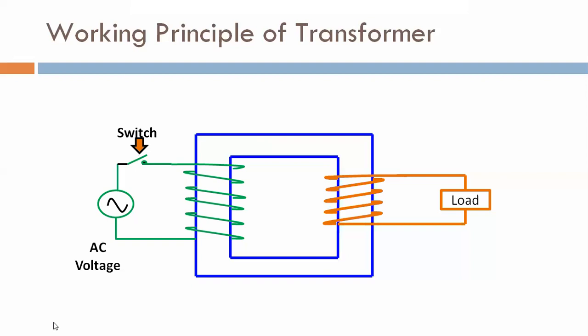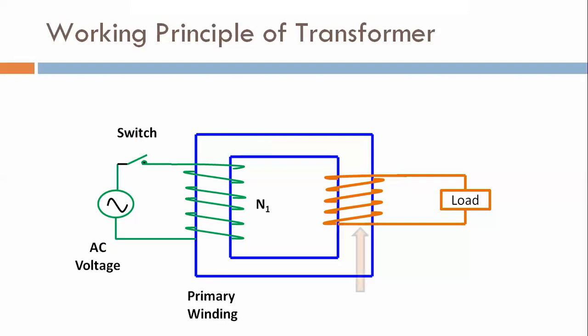These two windings are connected in such a way that they are electrically separated but magnetically linked through a low reluctance path — that is, by the help of this laminated core, these two windings are connected. When we keep this switch in the on mode, the primary winding is connected with AC voltage and it produces alternating flux in the core.